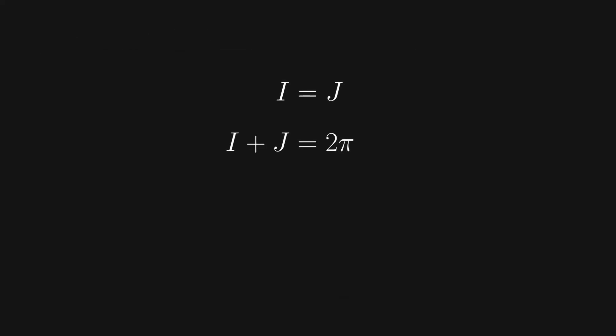At this point, we've actually finished most of the work. We're left with a system of linear equations that can be solved easily by substitution. Since I equals J, we can replace the J in the second equation with another I, leaving us with 2I. Finally, we can divide both sides of the equation by 2, showing that I equals π.